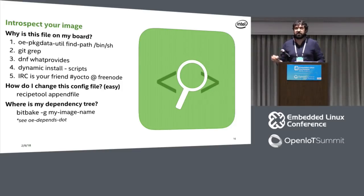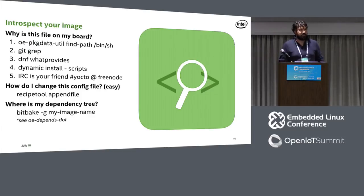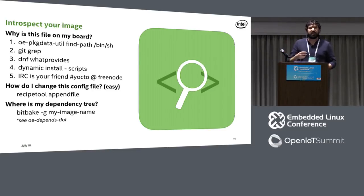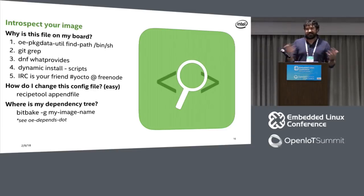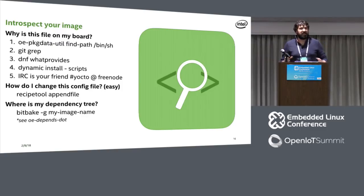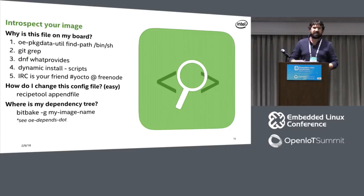We switched recently from smart to DNF, and the difference is huge. DNF gives you a lot of introspection into what's on your board and why. But keep in mind that when we do a build and create a file system, a lot of this stuff is done dynamically. Init scripts are a great example — somewhere in rc.init.d it's generating a file and plopping it on the file system after boot. If someone has tried to sneak something on your board using a rootfs post-process command, these tools won't solve that problem. For that, I have IRC — one of the more friendly open-source communities. If you find something and don't understand how it got there, post it to the channel and we'll respond.